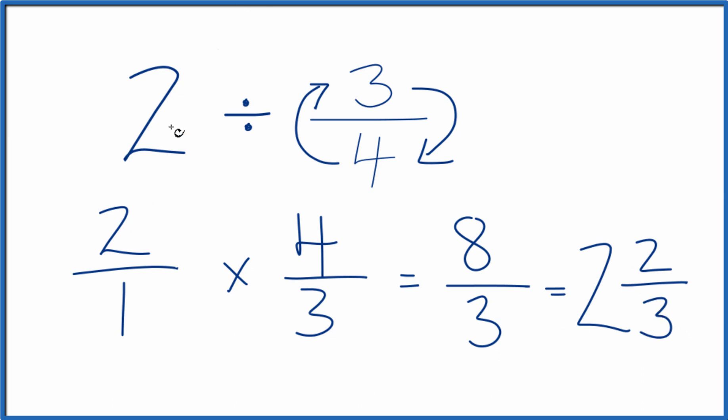So in answer to our question, when we divide 2 by 3 fourths, we get either 8 over 3, or we could get the mixed number 2 and 2 thirds. This is Dr. B. Thanks for watching.